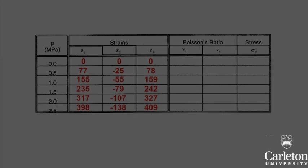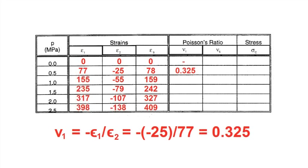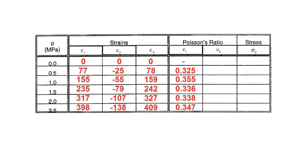For the open ends case, calculate Poisson's ratio under each internal pressure, except under 0, under the two cases: when comparing strain 1 with strain 2, and when comparing strain 6 with strain 2.